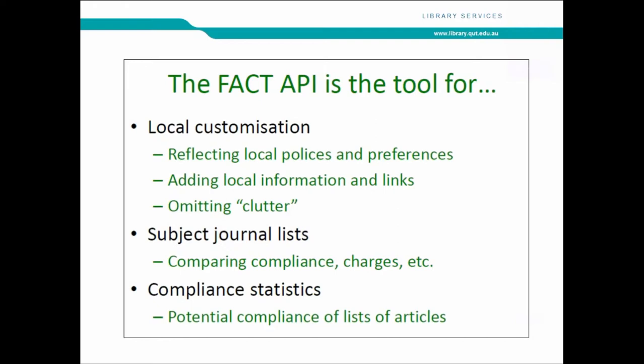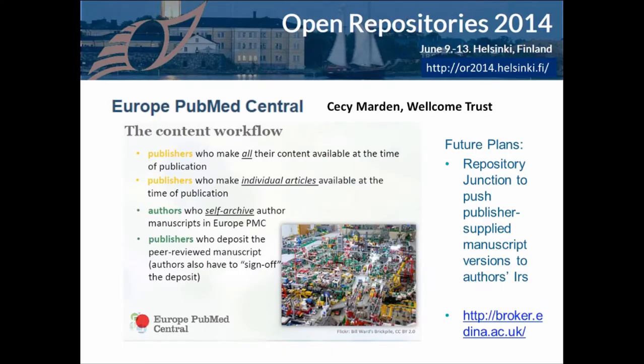Another paper was by Europe PubMed Central, discussing how they get articles funded by the Wellcome Trust into Europe PubMed Central by a variety of means — open access journals making all content available, hybrid journals making individual articles open access, authors self-archiving directly, and publishers supplying accepted manuscripts to PubMed Central where the authors need to sign off. They also spoke about Repository Junction, a broker that pushes publisher-supplied accepted manuscripts to the relevant institutional repositories.